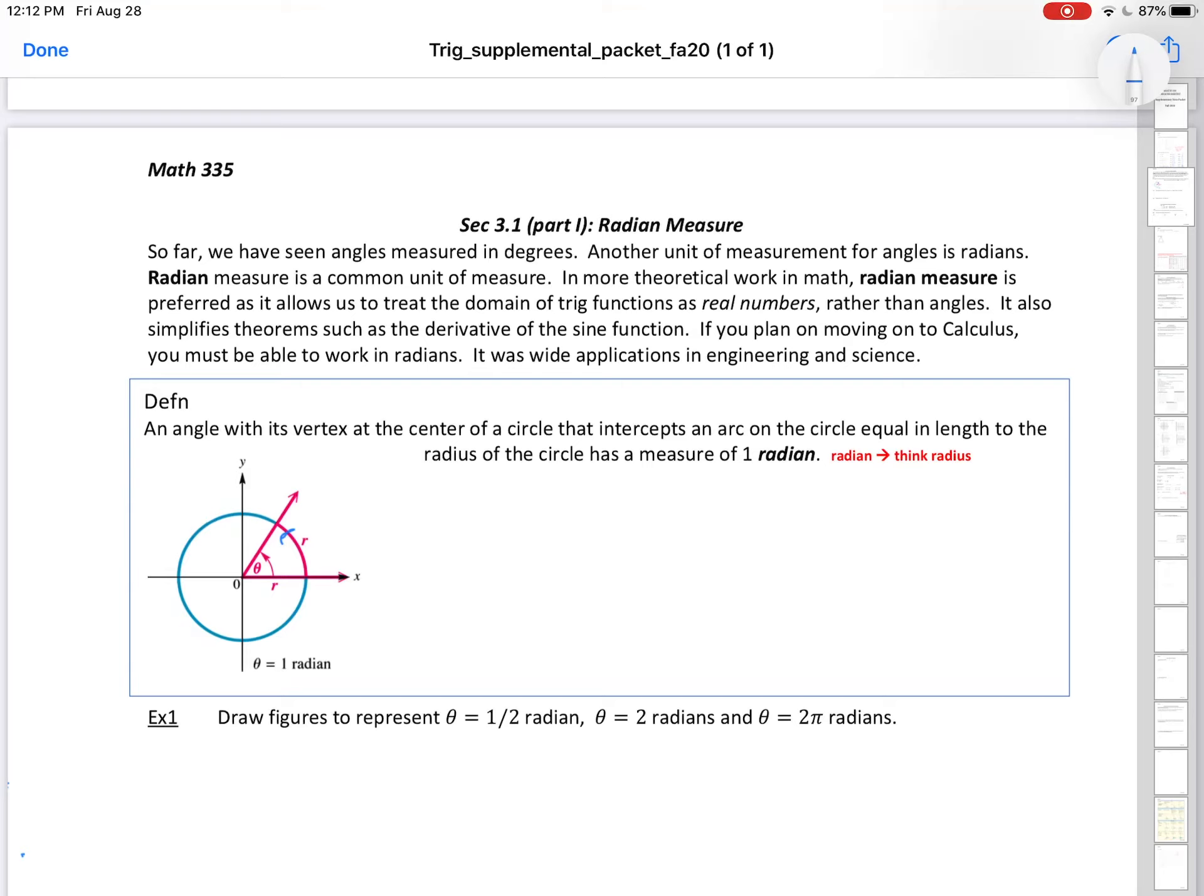The reason why it's better is because we've related it to real numbers. Degrees aren't real numbers. They're just arbitrarily defined as 1/360th of a full rotation. What we're going to relate ours to is arc length. An angle with its vertex at the center that intercepts the arc of a circle equal in length to the radius of the circle has a measure of 1 radian.